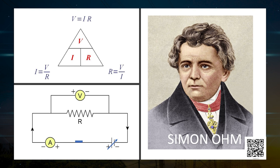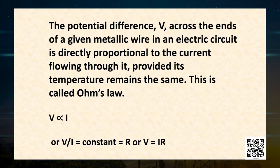In 1827, a German physicist George Simon Ohm found out the relationship between current flowing in a metallic wire and the potential difference across its terminals. The potential difference V across the ends of a given metallic wire in an electric circuit is directly proportional to the current flowing through it, provided its temperature remains the same. This is called Ohm's law. So V is proportional to I. Removing the proportionality sign and adding a constant R — the resistance of the wire — we get Ohm's law in mathematical form: V = IR.